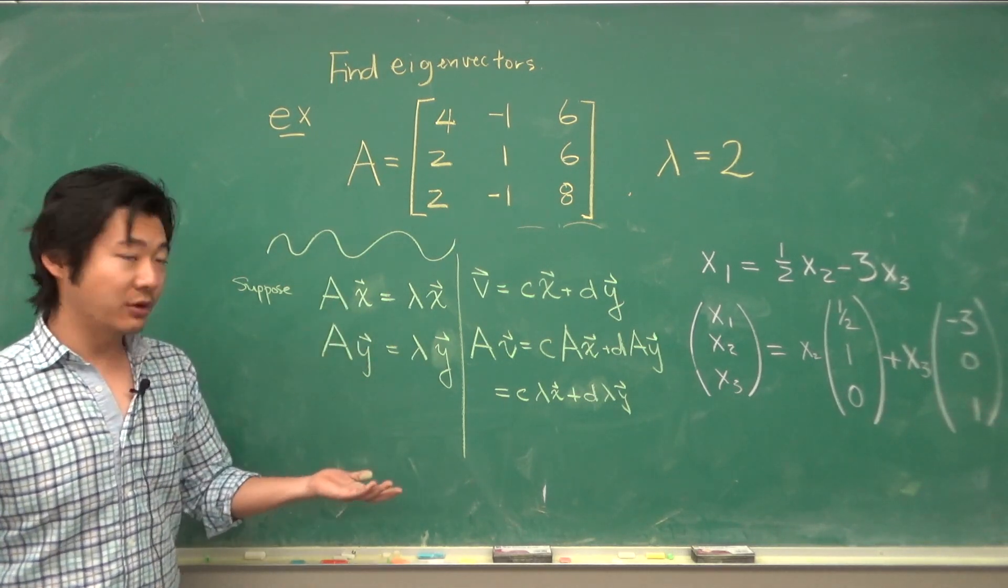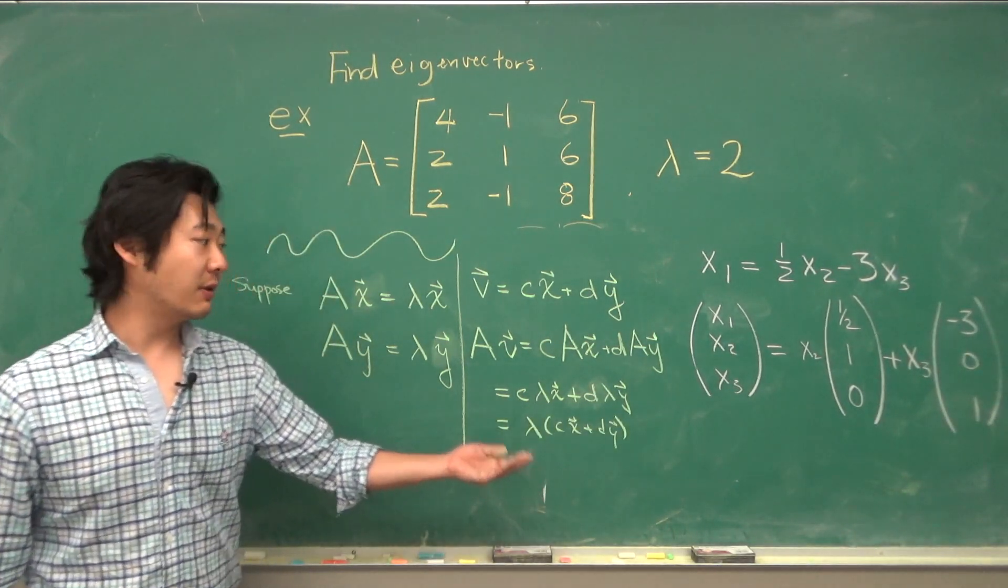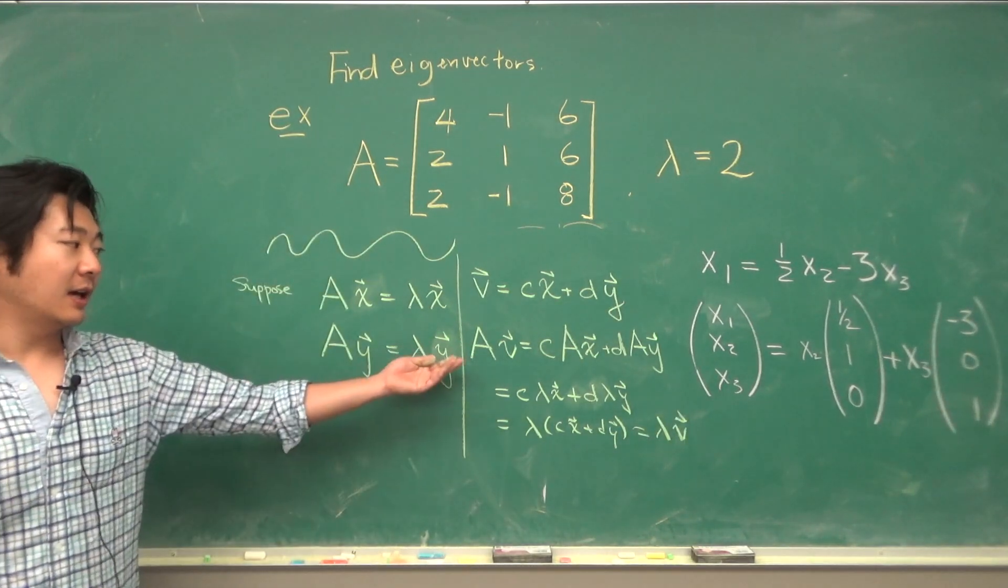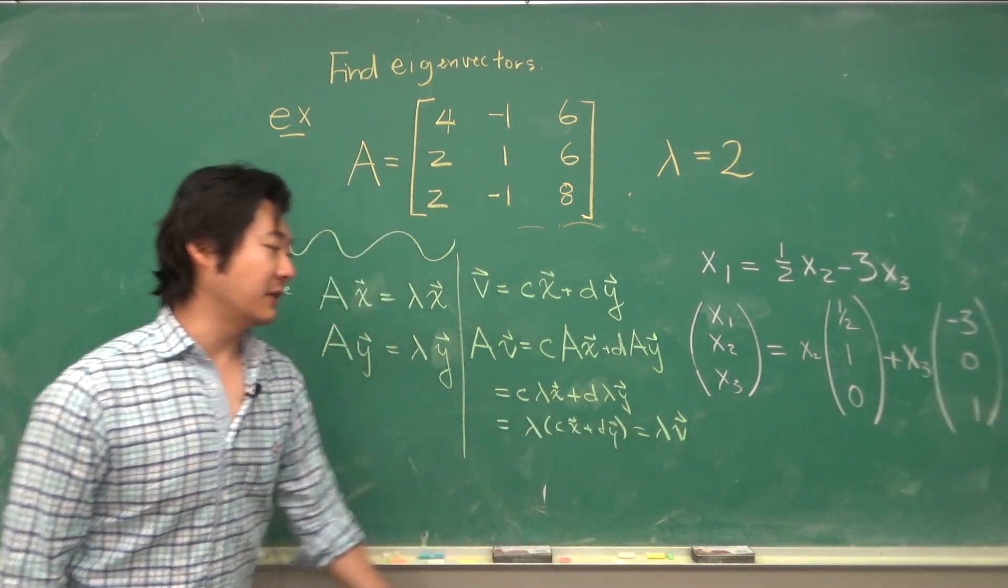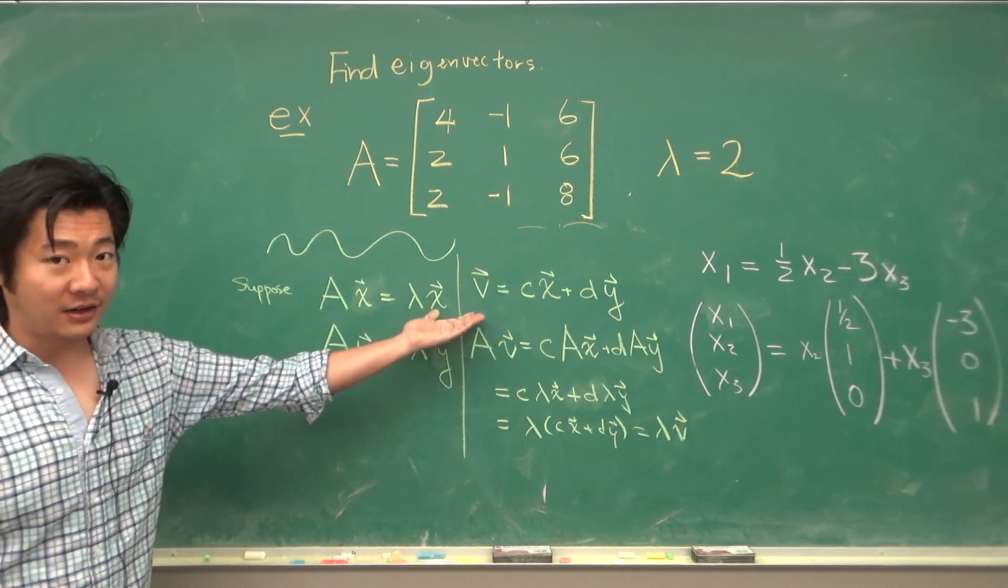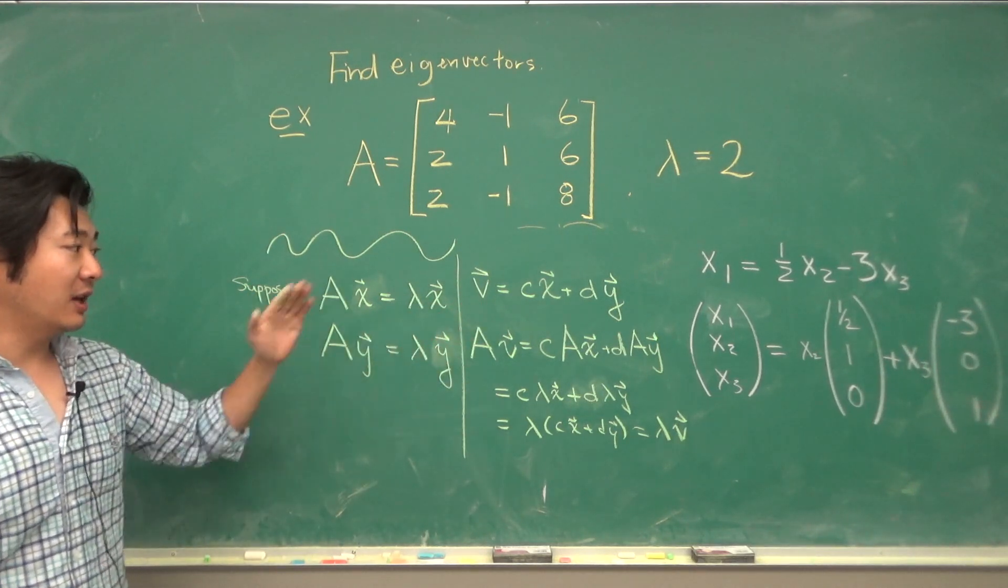So that we can replace Ax and Ay with lambda x and lambda y. Lambda is just a scalar, so we can factor it out. But cx plus dy is just v. So we get that Av is equal to lambda v, which means that v is another eigenvector corresponding to the same eigenvalue lambda.